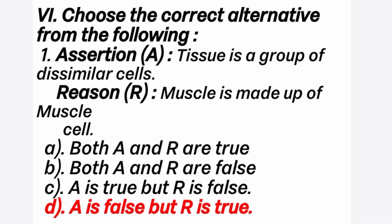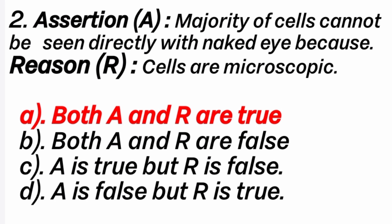Sixth section: choose the correct alternative. First question — Assertion: muscle is a group of dissimilar cells. Reason: muscle is made up of muscle cells. Answer is option D: assertion is false but reason is true. Second question — Assertion: majority of cells cannot be seen directly with the naked eye. Reason: cells are microscopic structures. Answer is option A: both assertion and reason are true, because cells are microscopic and can only be seen under a microscope.